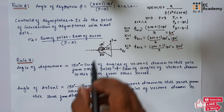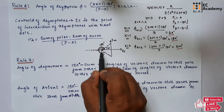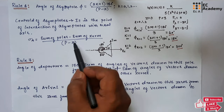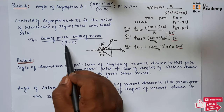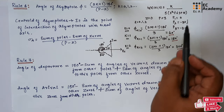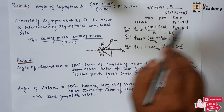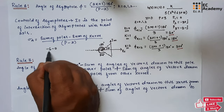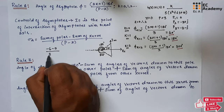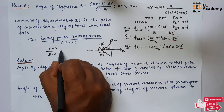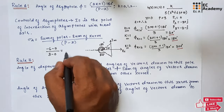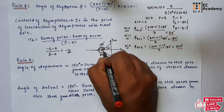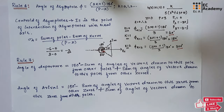We also need to find the centroid of asymptotes. The centroid is given as (sum of poles − sum of zeros) / (P − Z). Here, the sum of poles is minus 6, sum of zeros is 0, and P − Z = 3 − 0 = 3. So the centroid of asymptotes is equal to minus 2.